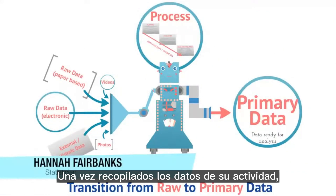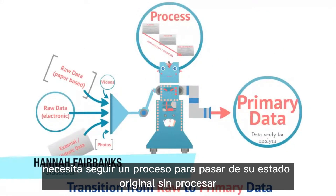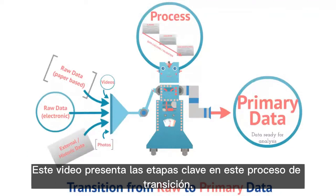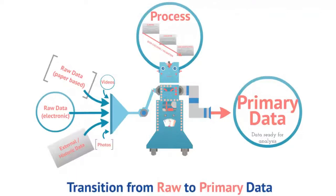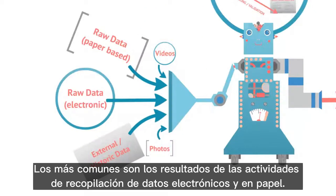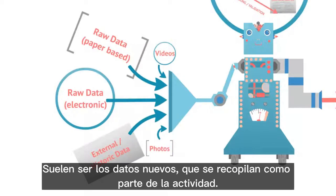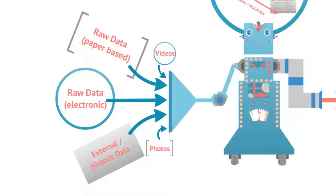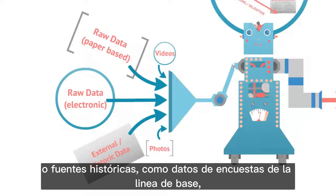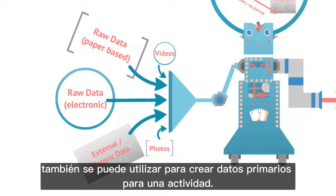Once the data has been collected for your activity, it needs to follow a process from being in its original raw state to transition through to the final primary data sets that will be analysed. This video introduces the key stages in this transition process. There are several formats raw data can take. The most common are the results from paper-based and electronic data collection activities. Other data from external sources, such as climate data from a local weather station, or historical sources such as baseline survey data, can also be used to create primary data for an activity.